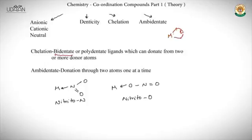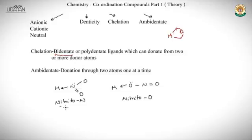Ambidentate ligands can donate through more than one atom but only one atom at a time. For example, nitrite (NO2⁻) can donate through N (since N has a lone pair) or through O, but not both simultaneously — doing so would generate a partial positive charge. So we call it nitrito-N or nitrito-O depending on where the donation is happening.